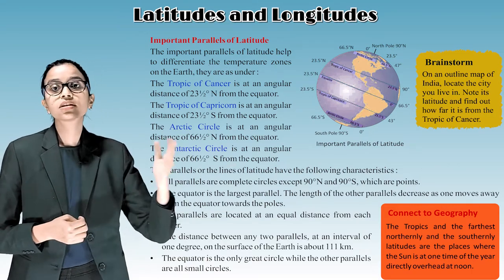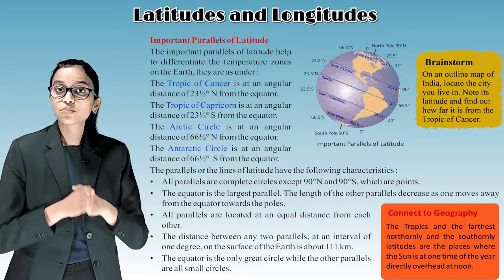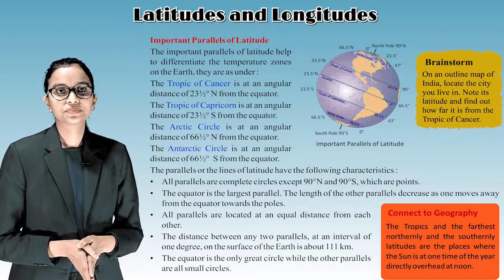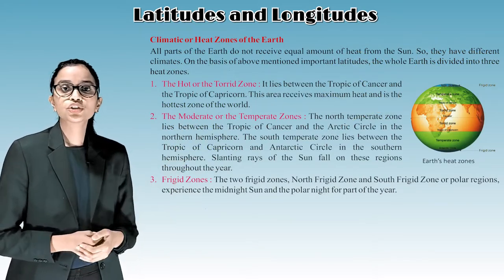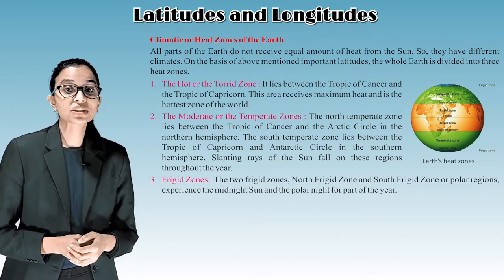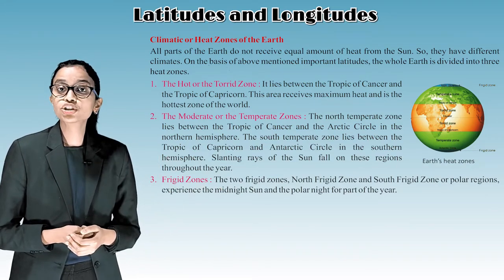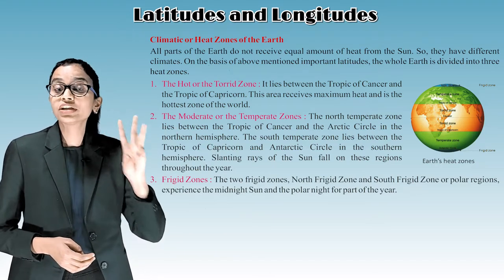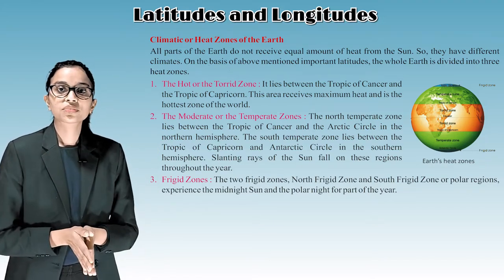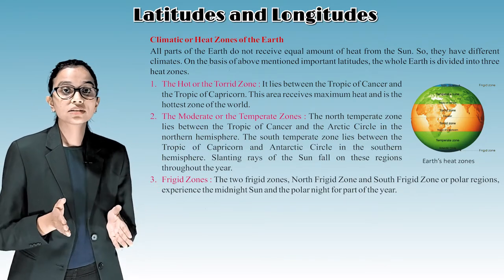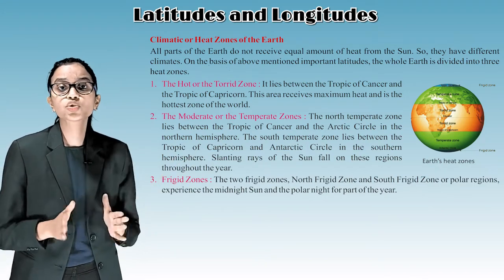The tropics and the farthest northerly and southerly latitudes are the places where the sun is, at one time of the year, directly overhead at noon. All parts of the earth do not receive equal amounts of heat from the sun, so they have different climates. On the basis of the important latitudes, the whole earth is divided into three heat zones. The first is the hot or torrid zone, which lies between the Tropic of Cancer and the Tropic of Capricorn. This area receives maximum heat and is the hottest zone of the world.